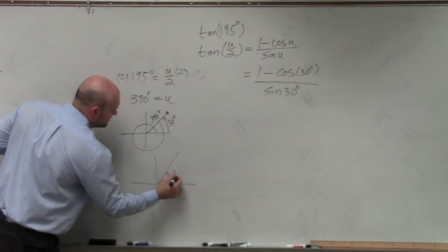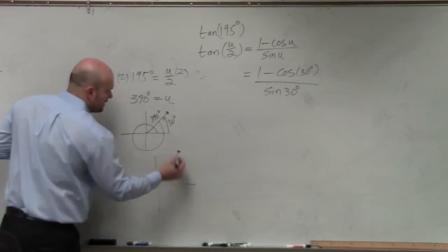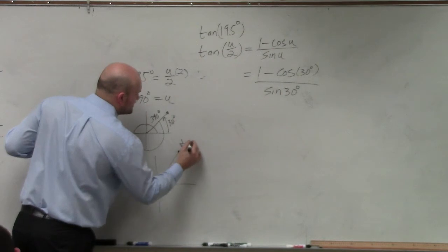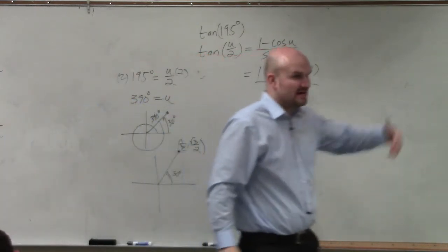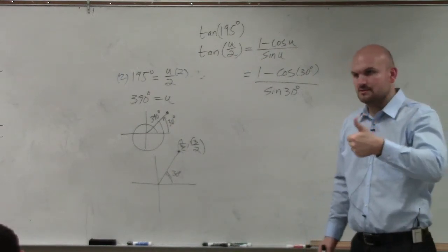Here's 30 degrees. Knowing my unit circle, that coordinate point is 1 half comma square root of 3 over 2. Would you guys agree with me based on your knowledge of the unit circle? Good.